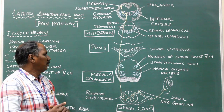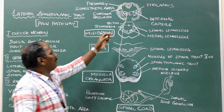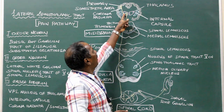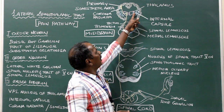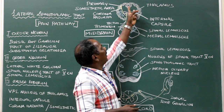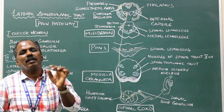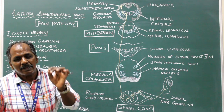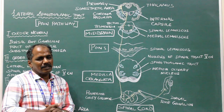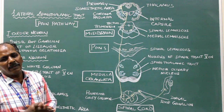Third order neuron: the axons of the third order sensory neurons arise from the ventral posterolateral nucleus of the thalamus, pass through the internal capsule and corona radiata, and finally reach the primary somesthetic area and secondary somesthetic area, which is present in the postcentral gyrus of the cerebral cortex. This is the origin, course and termination of the lateral spinothalamic tract.